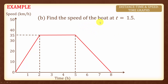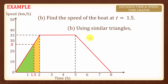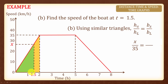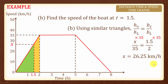Next, we are asked to find the speed of the boat at t equals to 1.5. Now, let the speed be x here. And similarly, we will use similar triangles and the ratio of their corresponding lengths. The height of the smaller triangle is x, the height of the larger triangle is 35, the base of the smaller triangle is 1.5, and the base of the larger triangle is 2. Multiplying 35 on both sides, we will have x equals to 26.25 km per hour.